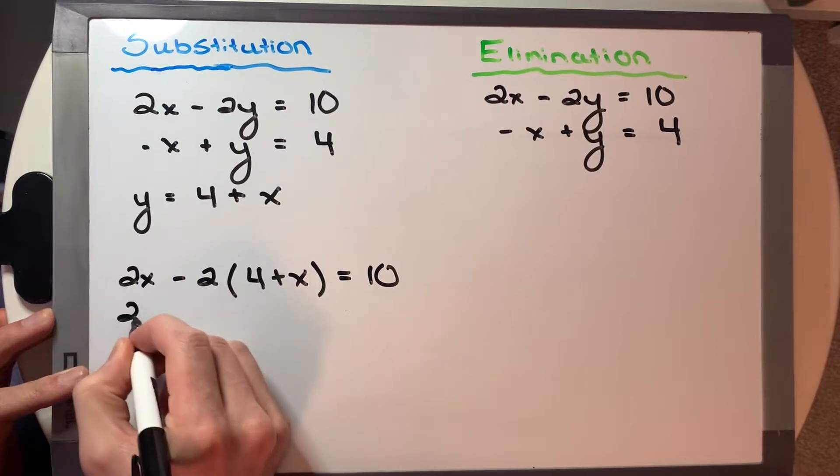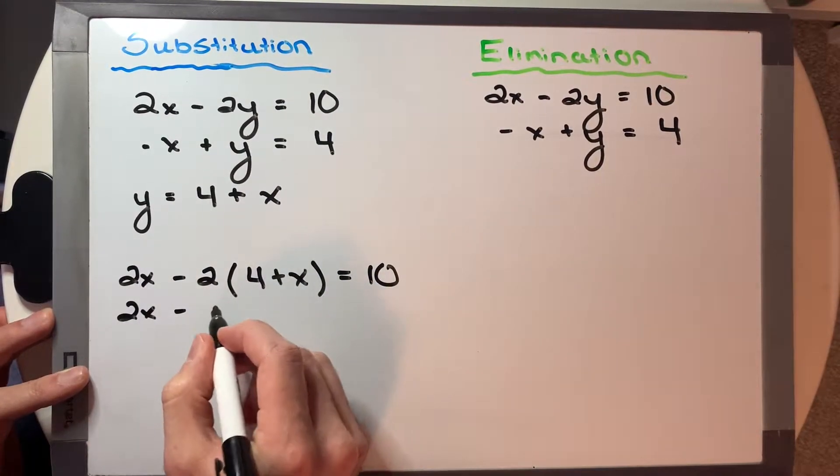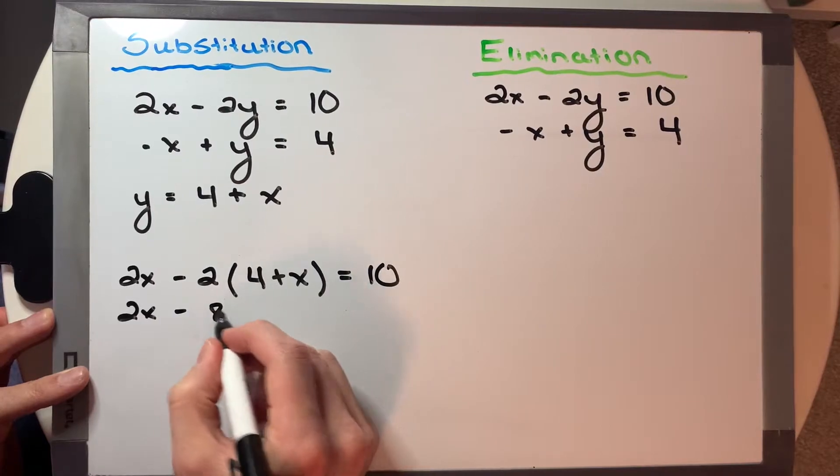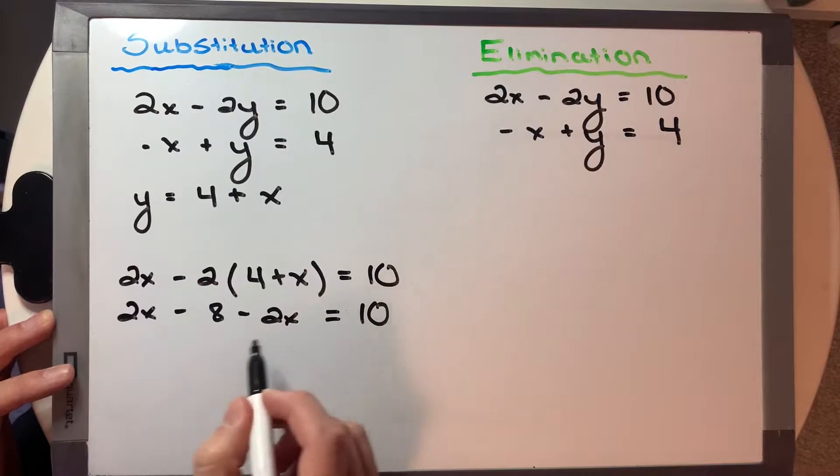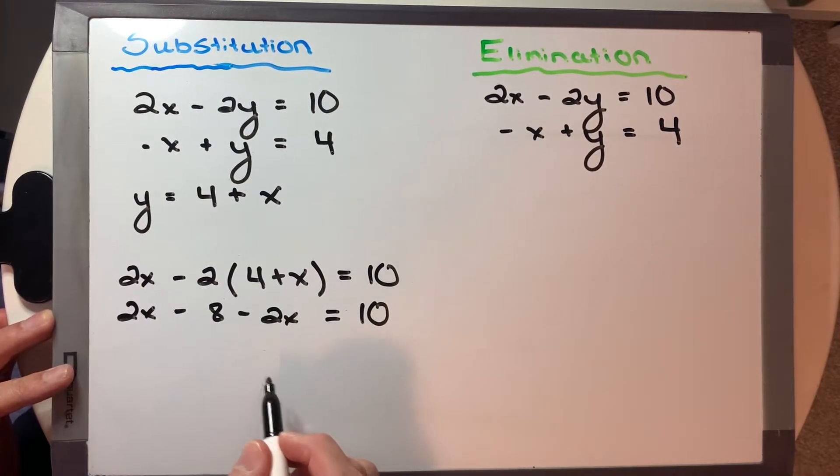Now we want to solve for our solution. So we expand this bracket here. And then we say 2x minus 2x, well those just eliminate, so those are gone.